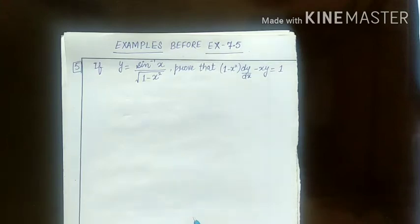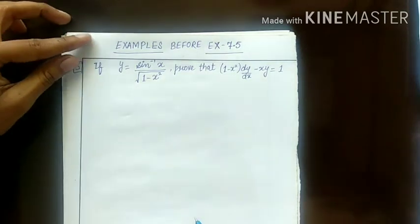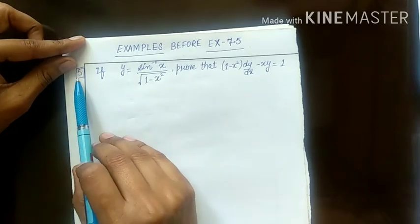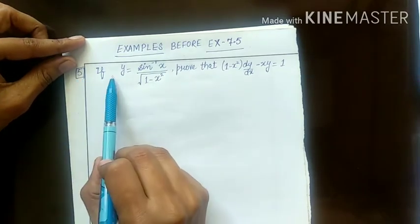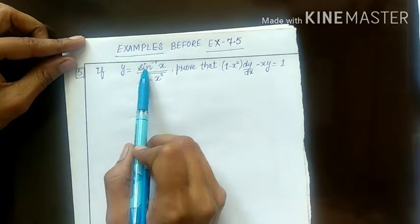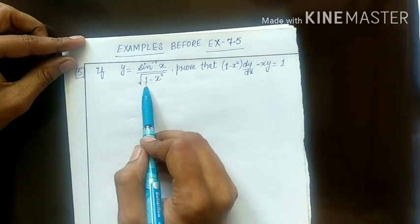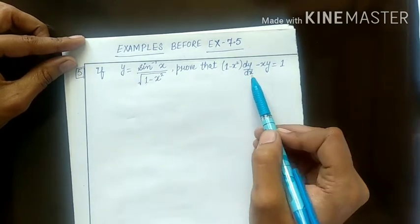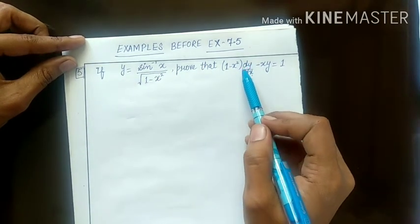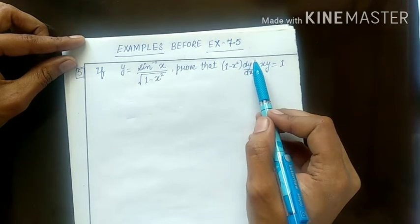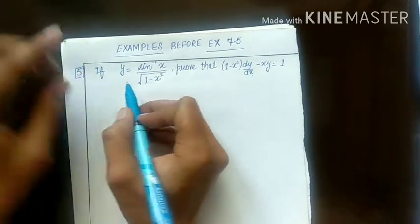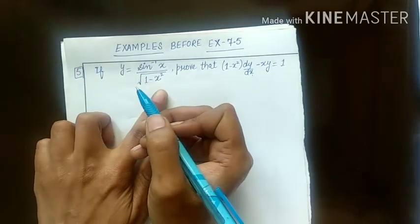Students, today we will do some examples from Exercise 7.5. The first example is: if y equals sin inverse x upon under root 1 minus x squared, then prove it. This means you have to find dy by dx. You have to see this statement here.